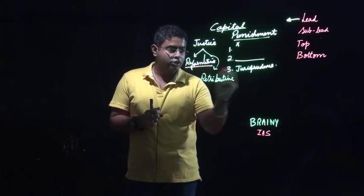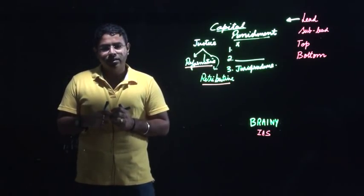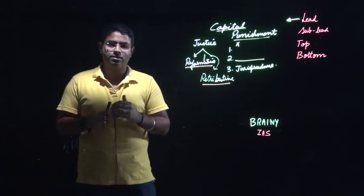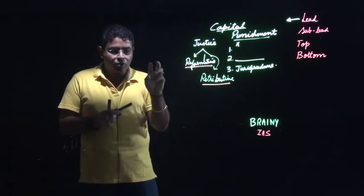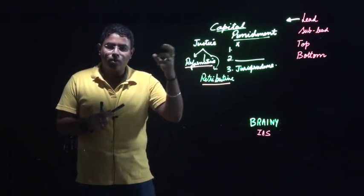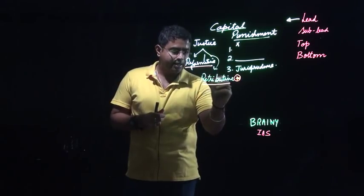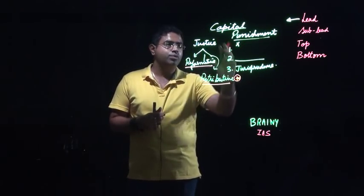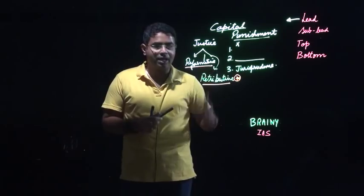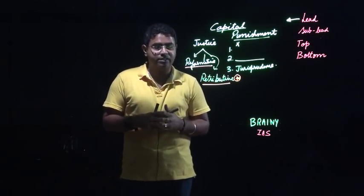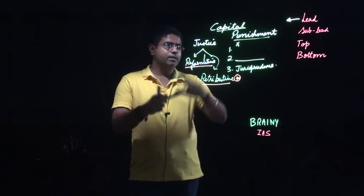The other type of justice system in jurisprudence is retributive. Retributive means that the kind of mistake you have made, the kind of hurt you have given, you should also get the same kind of hurt. If you have hurt someone, you should be hurt in return. This is the core of retributive justice, and it is under this retributive justice that we include capital punishment.